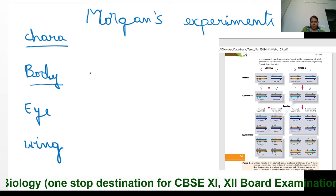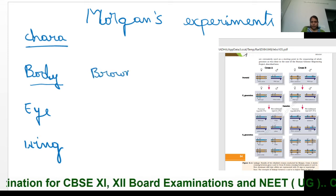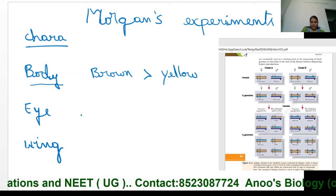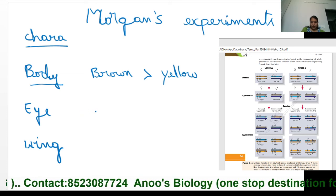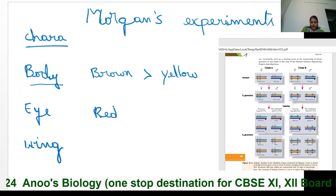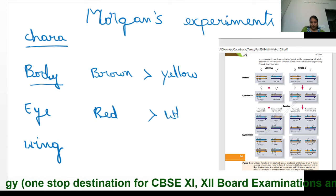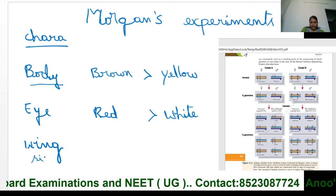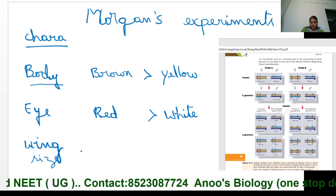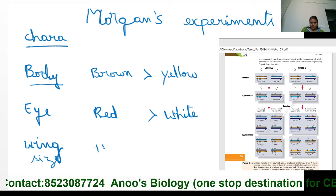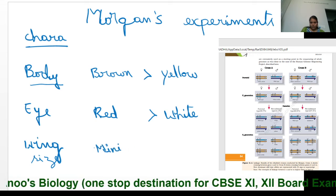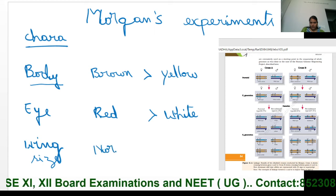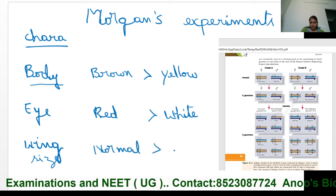Body color has two contrasting traits: brown body color and yellow body color. Brown body color is dominant over yellow. For eye color, the two contrasting traits are red colored eye and white colored eye; red is dominant over white. For wing size, the two contrasting traits are normal wing and miniature wing; normal wing is dominant over miniature wing.